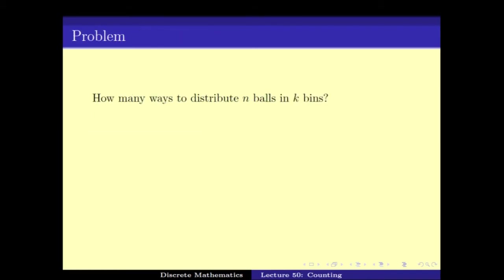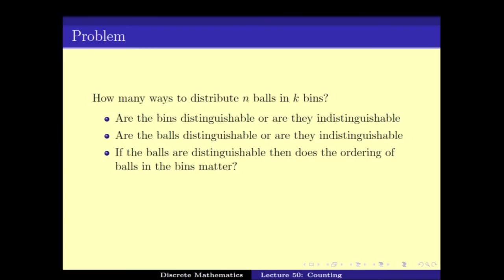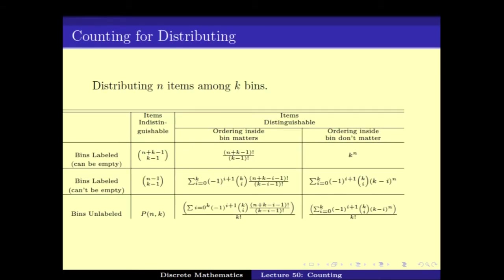The other case is: how many ways can we distribute n balls into k bins? This depends on whether the bins are distinguishable or indistinguishable, whether the balls are indistinguishable or distinguishable, whether the order inside them matters, and whether the bins can be empty. These are the various cases that we handled, and by doing so we went through the whole of it.